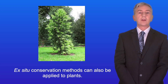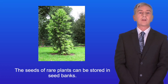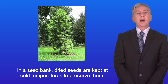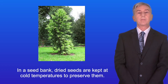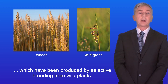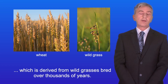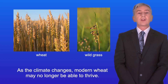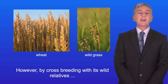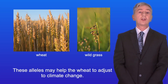Ex situ conservation methods can also be applied to plants. For example, rare plant species can be cultivated in botanical gardens, and the seeds of rare plants can be stored in seed banks. In a seed bank, dried seeds are kept at cold temperatures to preserve them. This is particularly important for crop plants produced by selective breeding from wild plants, such as modern wheat derived from wild grasses bred over thousands of years. As the climate changes, modern wheat may no longer thrive, but by cross breeding with its wild relatives we may be able to introduce beneficial alleles that help the wheat adjust to climate change.